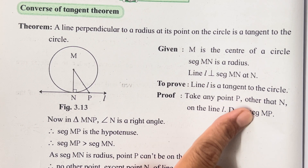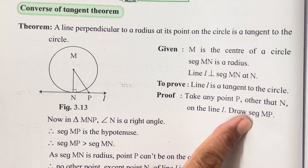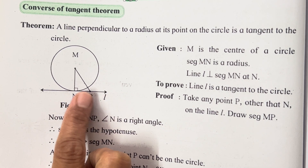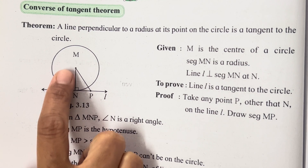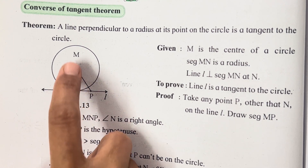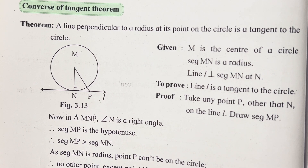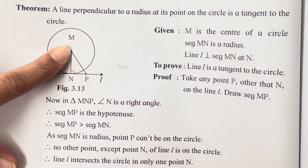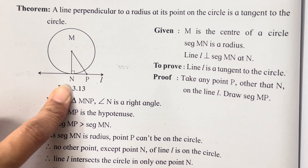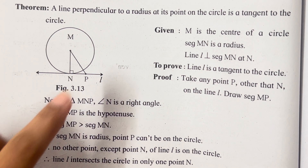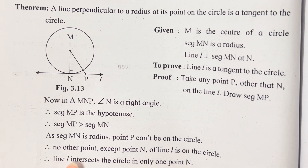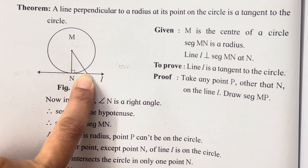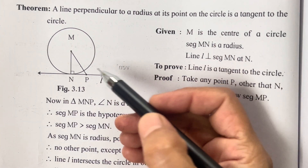Take any point P other than N on line l and draw segment MP. You have to take point P anywhere on the tangent and join it with the center, so a triangle will be formed. You will see that in triangle MNP, angle N is a right angle. The purpose of drawing this segment is to show that it is a right-angle triangle. MP is the hypotenuse as seen in the diagram.